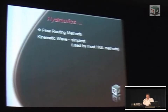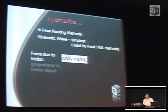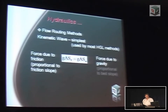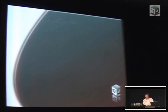The routing method used in 12D rational method and most HGL methods is the kinematic wave equation. It's a form where we have a friction force and a gravity force and they have to balance — a typical example would be Manning's formula or Colebrook-White or something like that. The beauty of this is it's easily calculated; the disadvantage is that it's only part of the whole story.